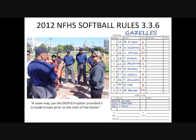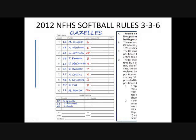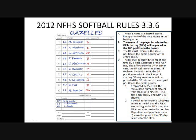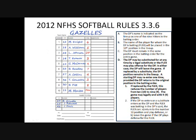We'll look a little deeper into this rule. Part A states the DP's name is indicated on the lineup as one of the nine hitters in the batting order. Part B states the name of the player for whom the DP is batting, also known as the flex, will be placed in the 10th position in the lineup. Part C states the DP must remain in the same position in the batting order for the entire game. Part D states the DP may be substituted for at any time by a legal substitute, or the flex may play offense for the DP. In either case, the DP will leave the game.